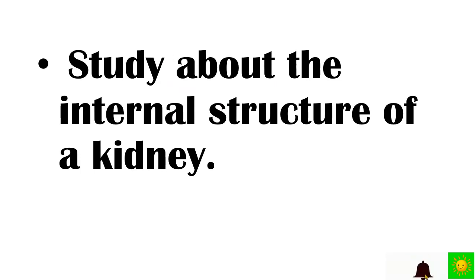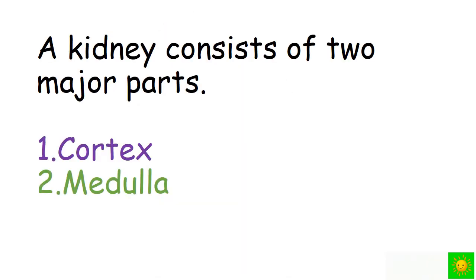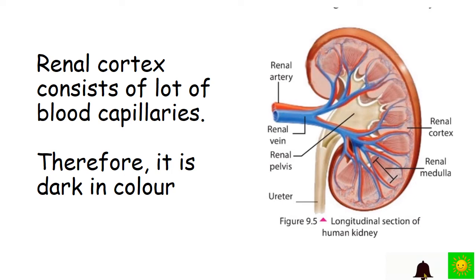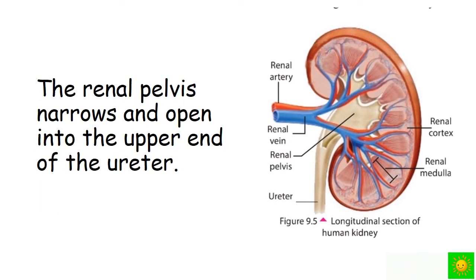Let's study the internal structure of the kidney. In the labeled diagram of the human kidney, you can see the renal artery, renal vein, renal pelvis, ureter, renal cortex, and renal medulla. A kidney consists of two major parts: the cortex and the medulla. The renal cortex contains many blood capillaries, giving it a dark color. Within the renal medulla there are triangular structures called renal pyramids, whose tips are directed toward the renal pelvis. The renal pelvis narrows and opens into the upper end of the ureter.